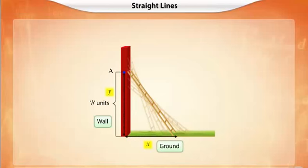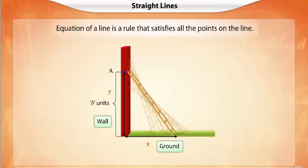We can say that a rule or relation is obtained between the horizontal and vertical positions of the ladder. Assuming the ladder to be a line, this rule will be satisfied by all the points on the line, which is the equation of the line.